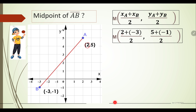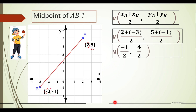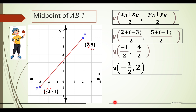Then x sub B is negative 3, and their sum is divided by 2. For the y-coordinates: the first y-coordinate is 5 and the second is negative 1. Simplifying: 2 plus negative 3 is negative 1, divided by 2; and 5 plus negative 1 is 4, divided by 2 equals 2. Thus the midpoint is located at (−1/2, 2). Locating that on the coordinate plane, that is the midpoint of segment AB with coordinates (−1/2, 2).